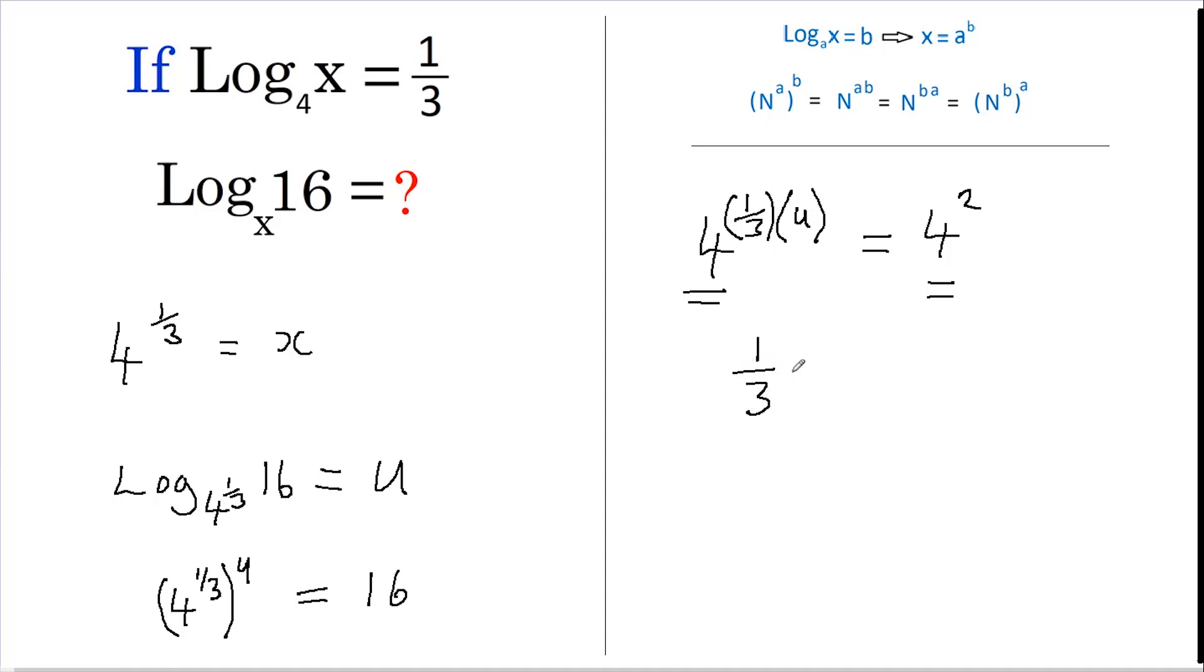So, one third of u must equal 2. And multiplying both sides by 3, we get that u must equal 6.